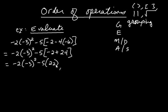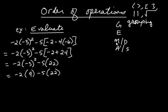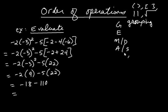Now I'm done with G. These parentheses are no longer grouping symbols because there's nothing to do inside them. Move on to E — exponential expressions. Negative 3 squared is 9. So it's negative 2 times 9, and then minus 5 times 22. Now finished with E, we move on to M. Negative 2 times 9 is negative 18, and negative 5 times positive 22 is negative 110. Now done with multiplication: negative 18 minus 110, which is negative 128.